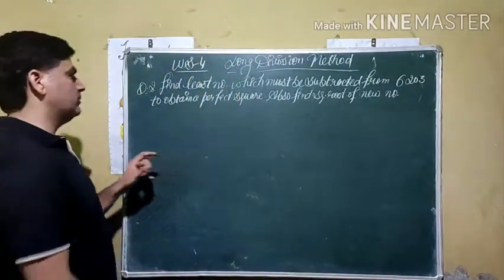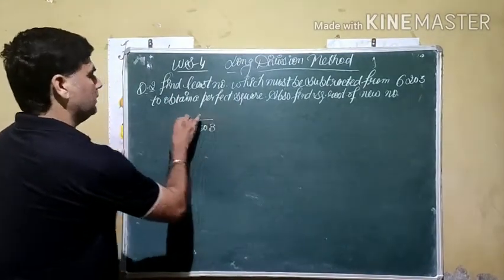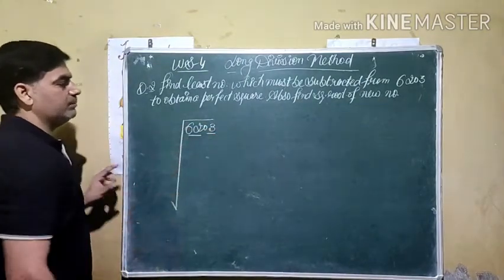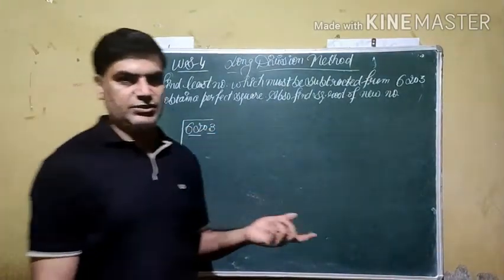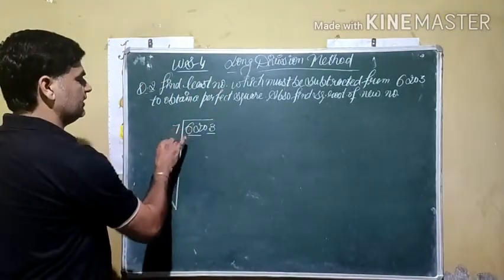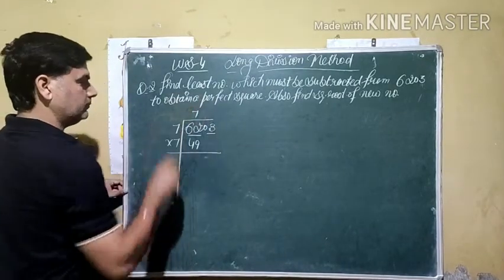Our value is given by 6203. If we do long division, pair from the right hand side. Square of which number is 62 or less than 62? We know that square of 8 is 64, square of 7 is 49, so we choose 7. Seven times seven is 49.